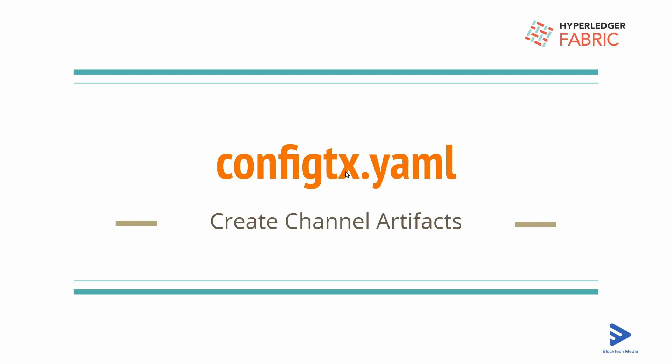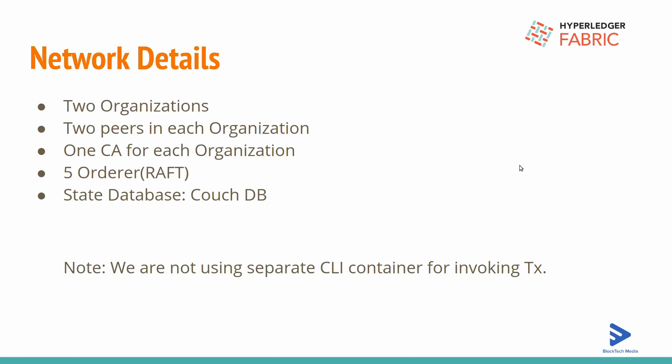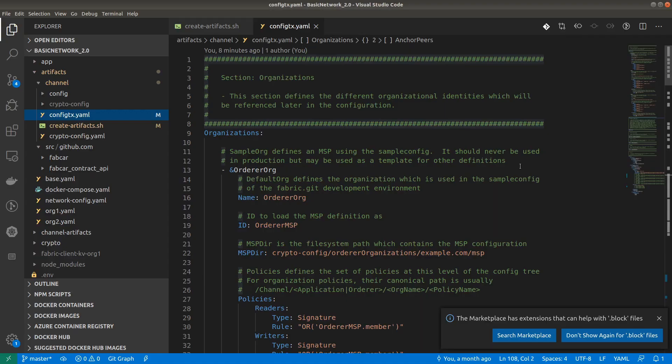Welcome back to the new video. In this video we are going to create channel artifacts using the configtx.yaml file. This is one of the most important files — using it we can create a channel transactions file and genesis.block as well. So let's dig into this file.